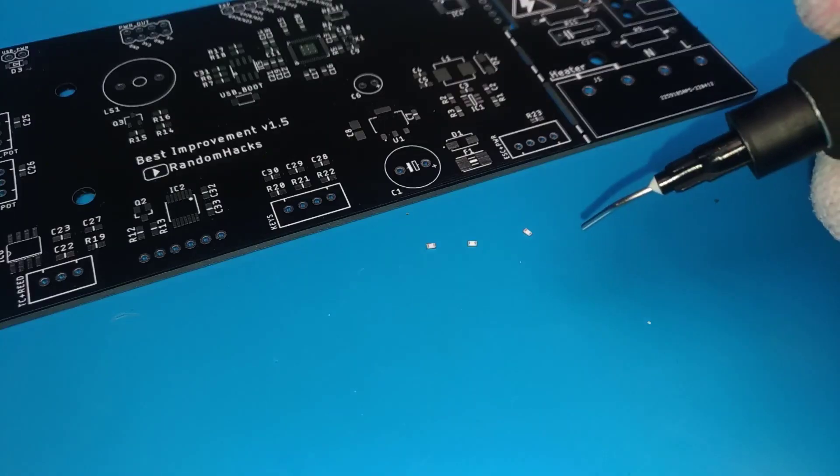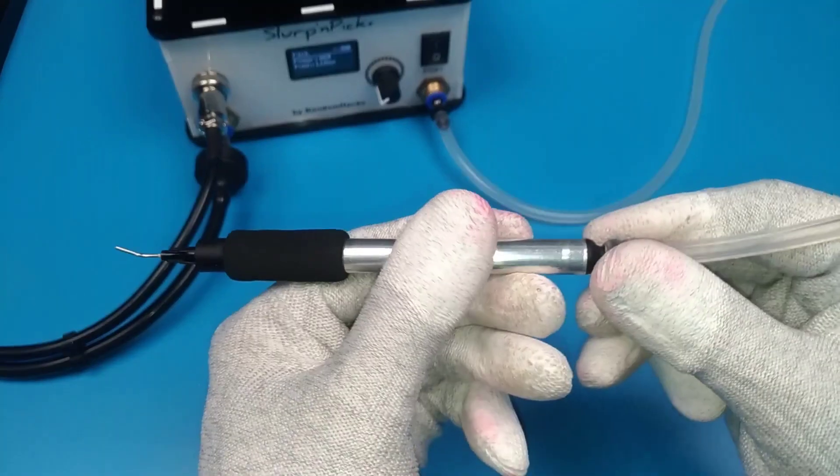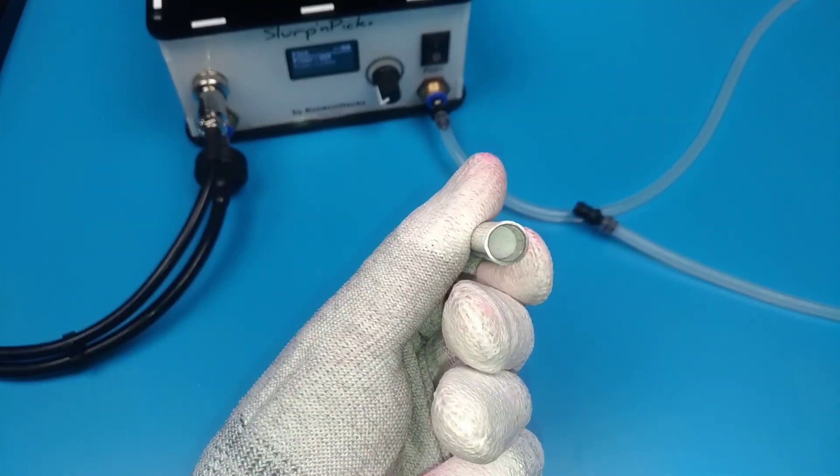This also allows you to flip SMD resistors with a short press of the footswitch. There is a filter inside the picking tool so no debris can reach the station.